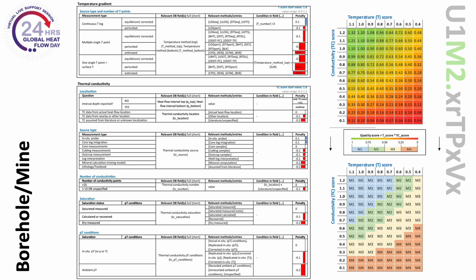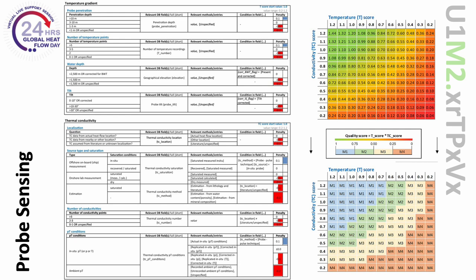The categories and associated penalties for the temperature and conductivity score computations are shown on the left side of this slide. Note that the penalties for some of the methods are positive, which improve the score above 1.0. On the right, the matrix of M scores from the computed temperature and conductivity quality scores is displayed. The top matrix shows the numerical quality scores, while the lower matrix shows the equivalent M scores for each numerical quality score. A similar calculation and sorting scheme is applied to probe sensing data, where the penalty can also be positive for some methods, and the eventual M scores for each temperature-conductivity score combination are shown in the lower right.